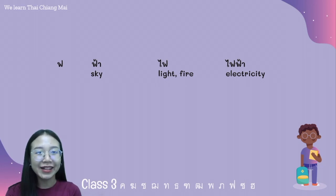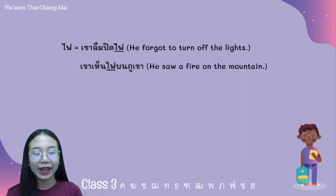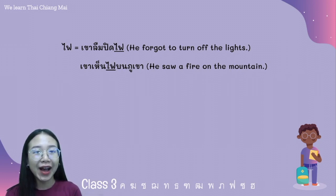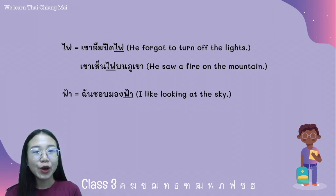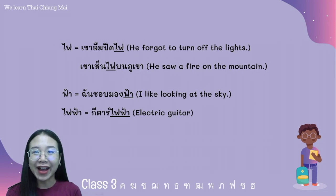Next, for ฟ, we have the words ไฟ and ไฟฟ้า. For example, the word ไฟ: เขาลืมปิดไฟ. The word ไฟ also has another meaning — fire — for example, เขาเห็นไฟ. And the word ไฟฟ้า — for example, ฉันชอบมองฟ้า. And the word ไฟฟ้า — for example, กีตาร์ไฟฟ้า. The word ไฟฟ้า means electricity.